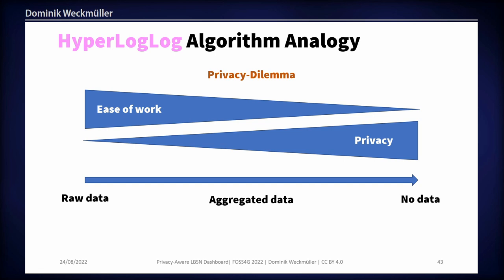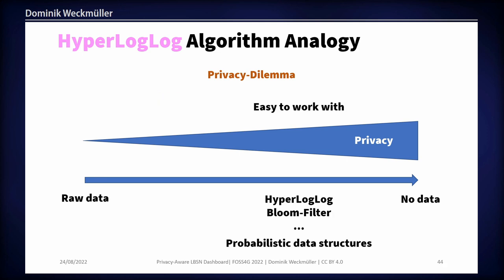This brings us to the privacy dilemma. If you have the raw data — think about the petabytes of social media data in the world — you can perform spectacular analysis, but privacy is at risk because you work with user IDs and sensitive information. If you have no data, there is 100% privacy. But if you still want to work with data without badly affecting privacy, there must be a middle way — and this is where probabilistic data structures like HyperLogLog or the bloom filter come in.